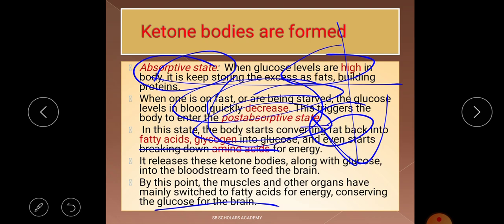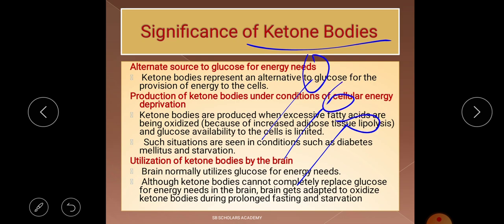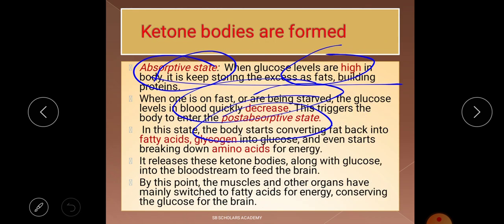Ketone bodies are released into the bloodstream to feed the brain. Muscles and organs switch mainly to fatty acids for energy, conserving glucose for the brain. From the NTA food and nutrition perspective, you need to know: what are ketone bodies, what are the three names, and what are the three roles or significance of ketone bodies. You don't need the detailed biochemistry.